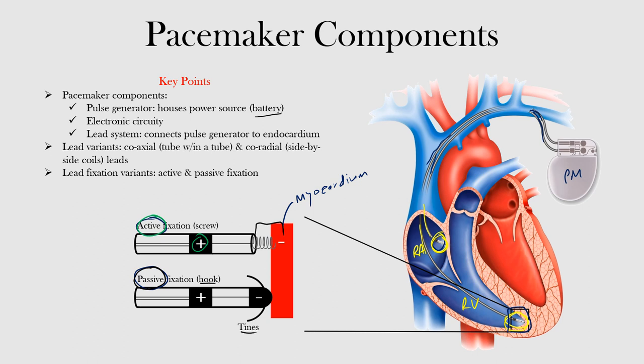Lead variants can be either coaxial — a tube within a tube — or co-radial, which are side-by-side coils. Lead fixation can be either active or passive. Active fixation inserts the lead into the myocardium for mechanical stability, while passive fixation uses tines like hooks to stabilize the lead against the endocardium.